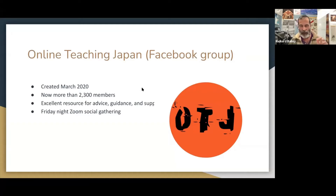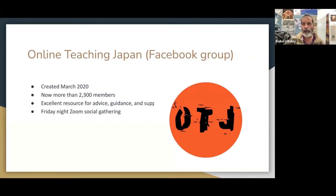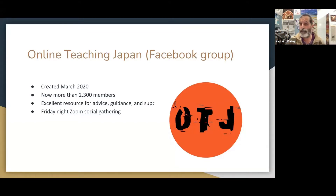This is an interesting note that actually brought David and me together. Someone started a Facebook group called Online Teaching Japan that grew organically from a few hundred members to now more than 2,300. It's an amazing Facebook group of English teachers that support everyone — you can post any kind of question or problem and you will immediately get feedback and help. We also have a Friday night social Zoom meeting where we all get together with adult beverages and talk about teaching.